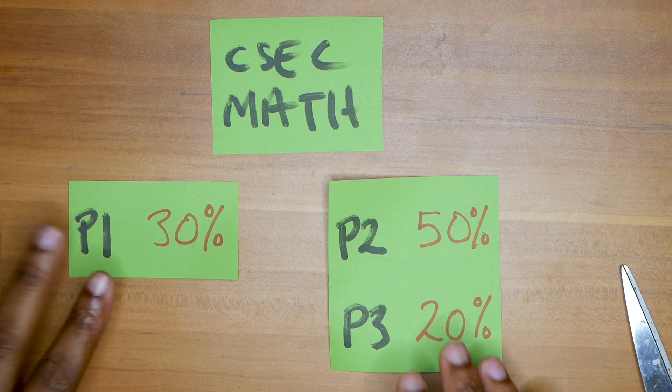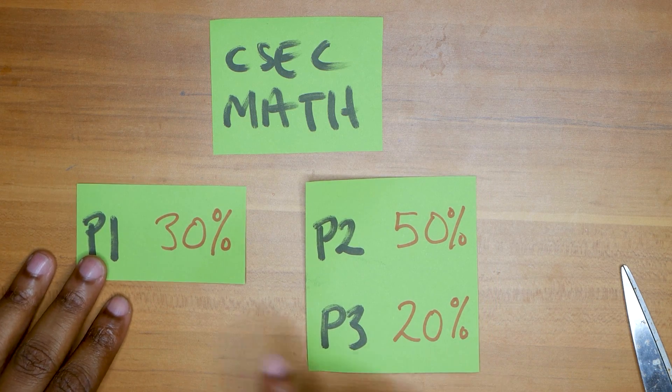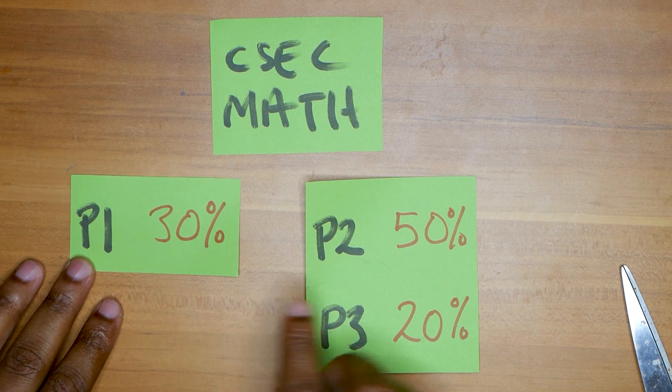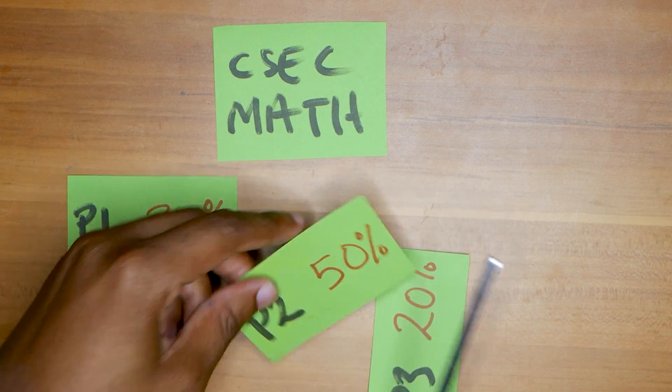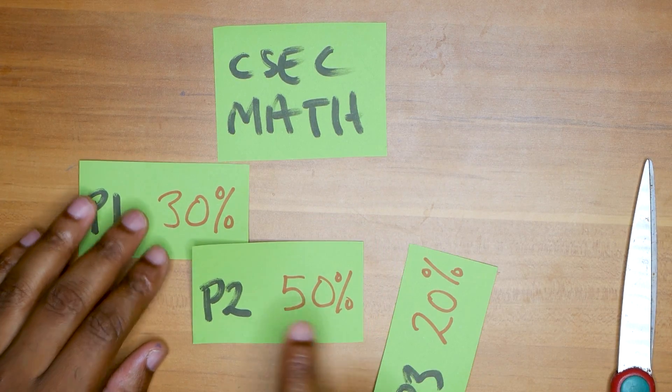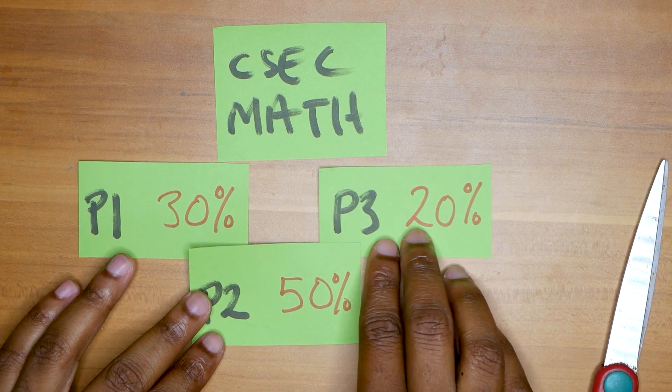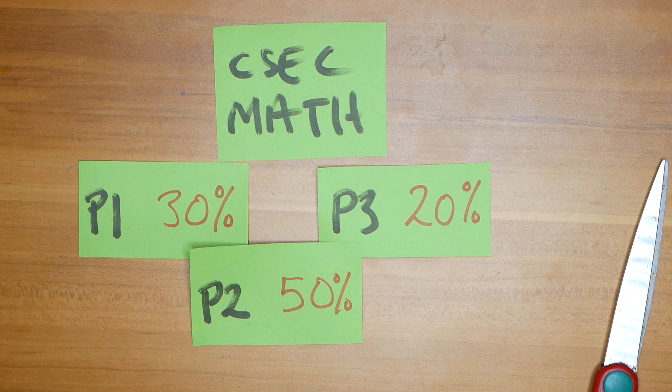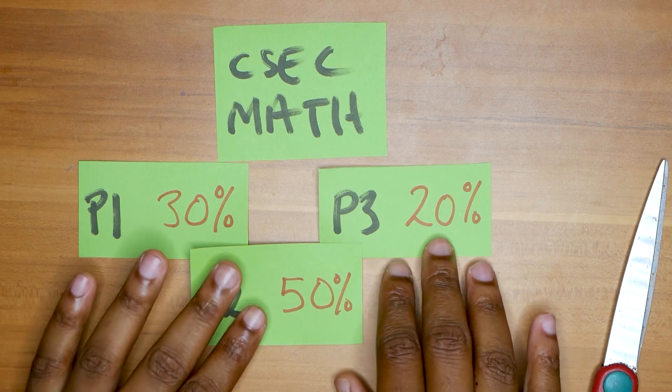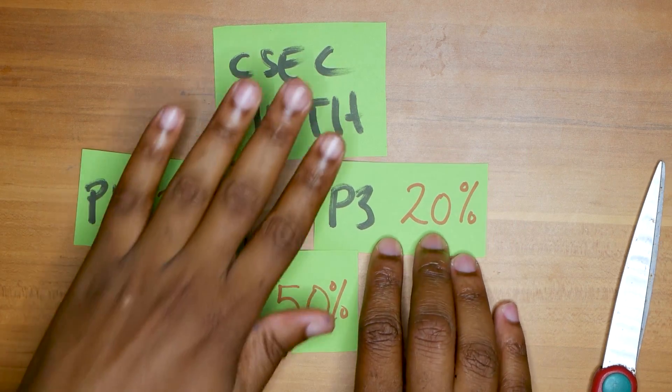There are three papers. The CSEC maths Paper One is a multiple choice, that's 30 percent. Paper Two is your written paper, that's 50 percent. That carries the most marks. This is what we focus a lot on in this channel.